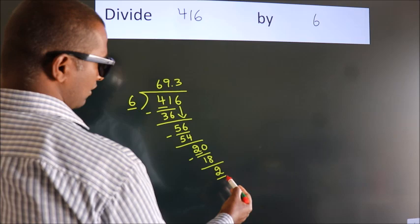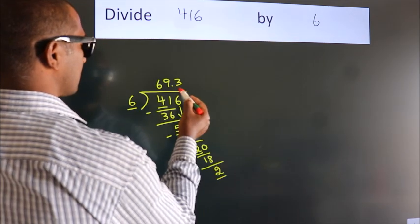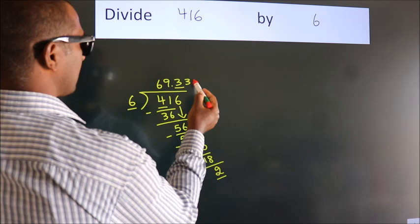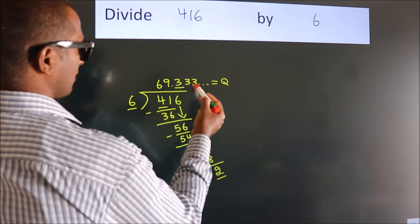And we got 2 again. That means this number keeps on repeating. So this is our quotient.